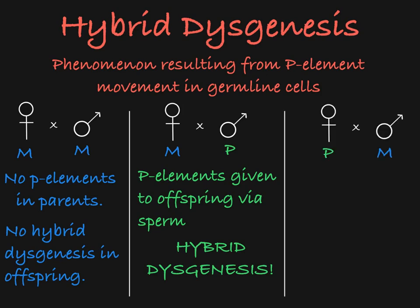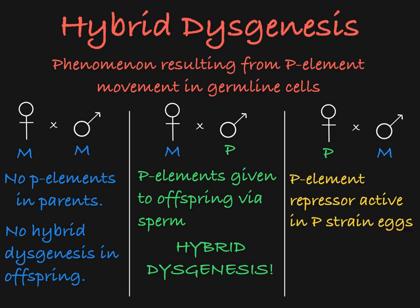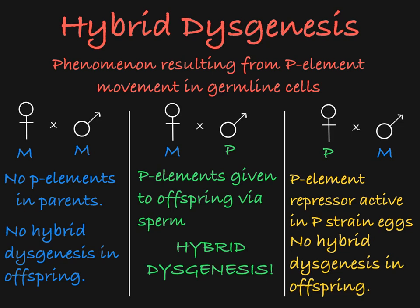Given a P strain female mated with an M strain male, you would expect hybrid dysgenesis to occur in the germline cells of the resulting offspring. But it turns out that in P strain females' eggs, there is a high concentration of P element repressor molecules which prevent the transcription of transposase. Without transposase, the P element cannot be excised from the DNA and therefore must stay put. Hybrid dysgenesis does not occur any time the mother donates a P chromosome to her offspring. So hybrid dysgenesis can only occur in offspring that receive the P strain chromosome from their father and the M strain chromosome from their mother — the only case in which P element transposase is active and able to mobilize the element in the germline cells.